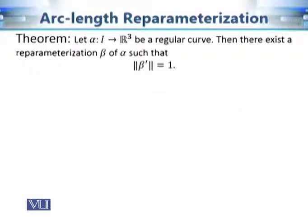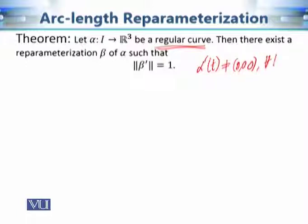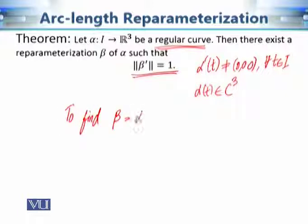We have a theorem which states that yes, we can do that. The proof is constructive, so when we follow the proof we will also be able to solve examples. We require a regular curve — the mathematical condition being that alpha prime of t should not equal the zero vector for all values of t in the given interval. Additionally, alpha should be a member of C³ (three times differentiable). Under these conditions, there exists a re-parameterization beta of alpha such that the speed of beta is 1. Our main target is to find the function h(s) which relates alpha with beta.